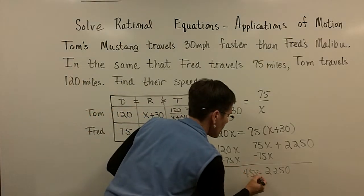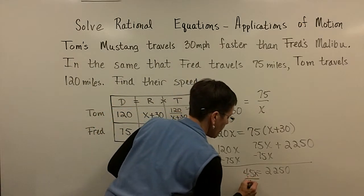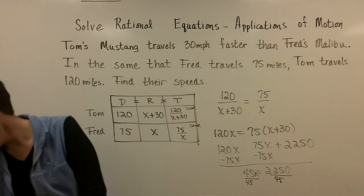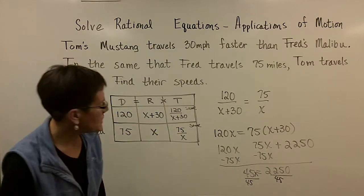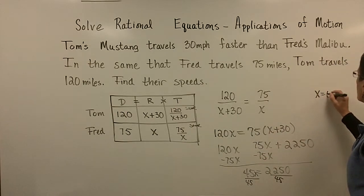And my ink is not working. Boy, I'm having trouble with pens. And I'm sorry, here's an x. Let's divide both sides by 45. So we'll divide by 45. And I believe that goes into there 50 times. x is equal to 50.